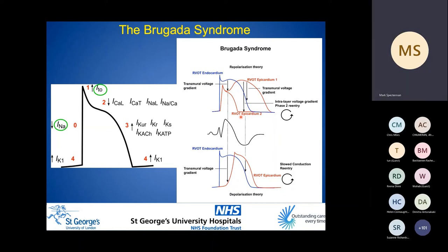The depolarization theory, on the other hand, suggests a slower action potential upstroke and delayed activation of the RV outflow tract epicardium. This may be due to Ito opposing reduced inward current, but there is also a complex macromolecular arrangement of the intercalated disc coupling cardiomyocytes. Areas of fibrosis and reduced connexin expression have been demonstrated in Brugada syndrome hearts, where slowed conduction may then drive re-entrant arrhythmias.